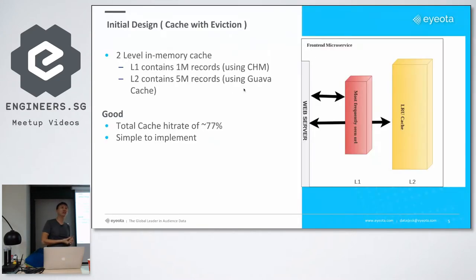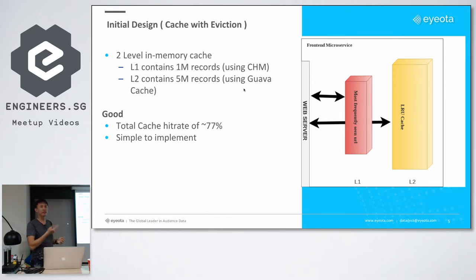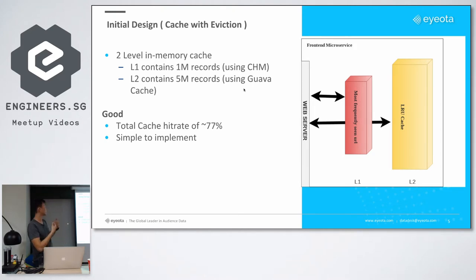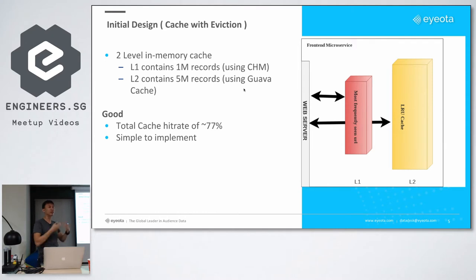What we came up with initially was a design consisting of a most-frequently-seen URL cache with an LRU cache behind it, which evicts based on size any URLs not seen for some time. These two in-memory cache levels work as follows: the first level pulls about 1 million recently-seen records into a concurrent hash map, and the second level is a Guava cache that evicts entries not seen for some time. This was a pretty good cache with about 77% hit rate and was simple to implement. But as URL size increased, we were not able to hold enough records in memory, and this hit rate was decreasing.